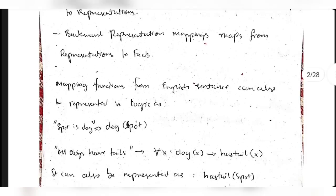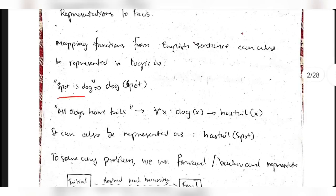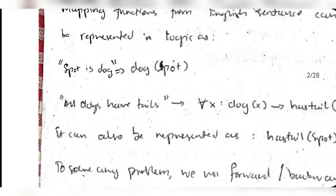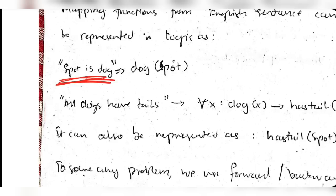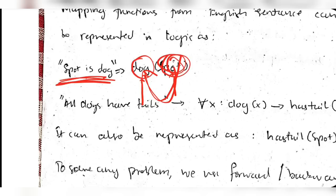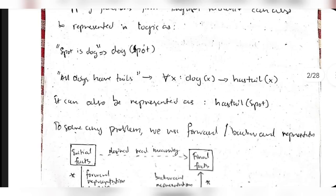For example, 'Spot is a dog' is a fact. To represent it using predicate notation, you write dog(spot) - this is mostly used in AI and predicate logic. So 'spot is a dog' is written as dog(spot). It is read as: whatever is in the bracket, you read that first, add 'is a,' then write what is outside the bracket.